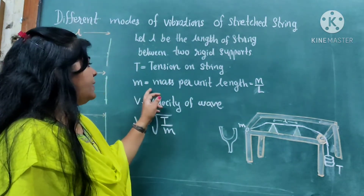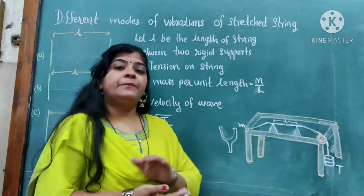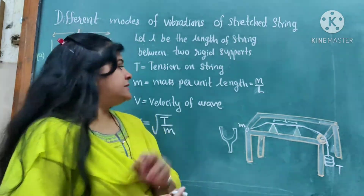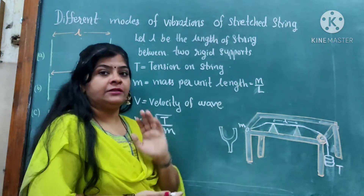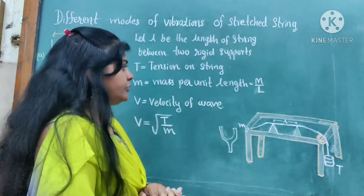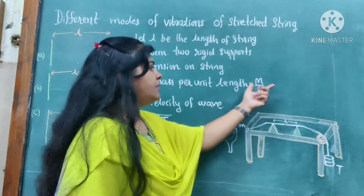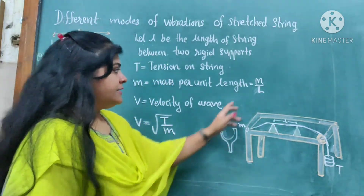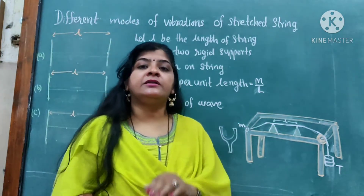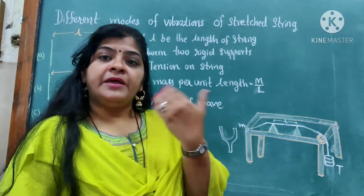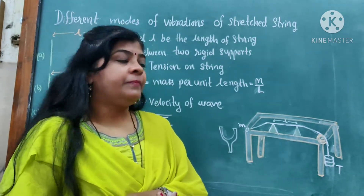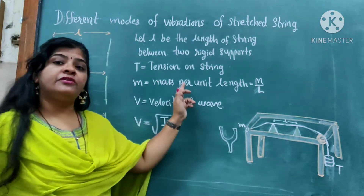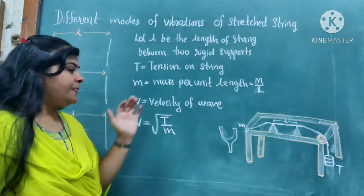Next, small m is represented as linear density also, and it is also called as the mass per unit length. What is mass per unit length? It means the mass of this wire divided by the length of this wire. Take a 100-meter wire and measure the mass of that wire. That ratio gives the mass per unit length, which is denoted by small m.